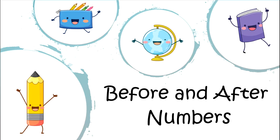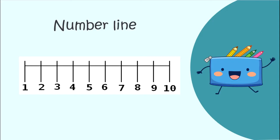So let's look at our number line. We're going to say our numbers on the number line. The first one we have here is 1, then we have 2, 3, 4, 5, 6, 7, 8, 9, 10. And they're all standing nice and neat in a line.